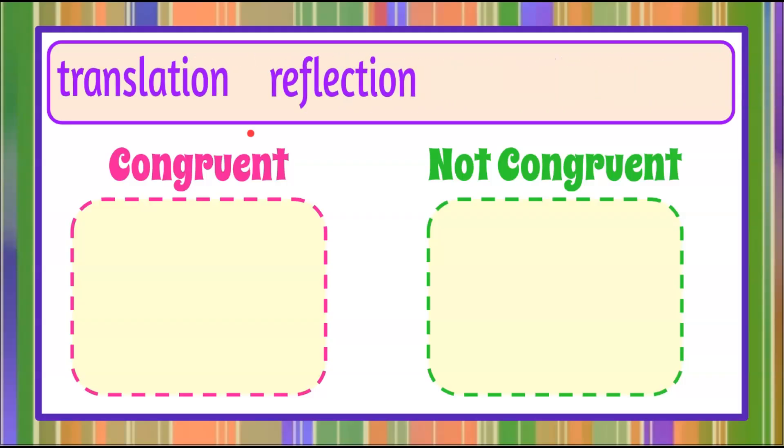We have translation, reflection, rotation, and dilation. Those are the four types of transformations that are listed in those sequences and we want to determine if the image after these transformations will result a congruent image or a not congruent image.